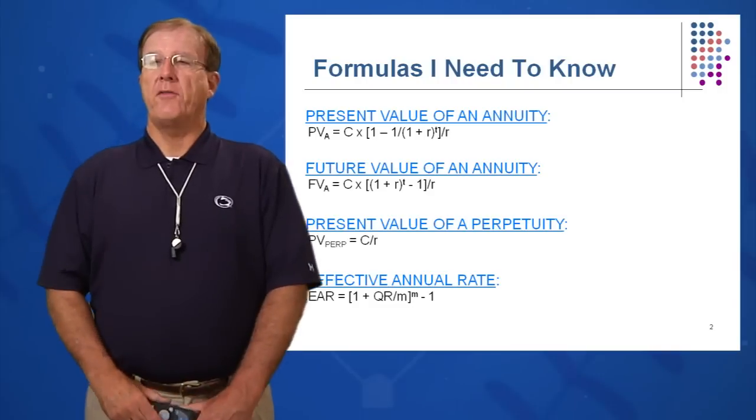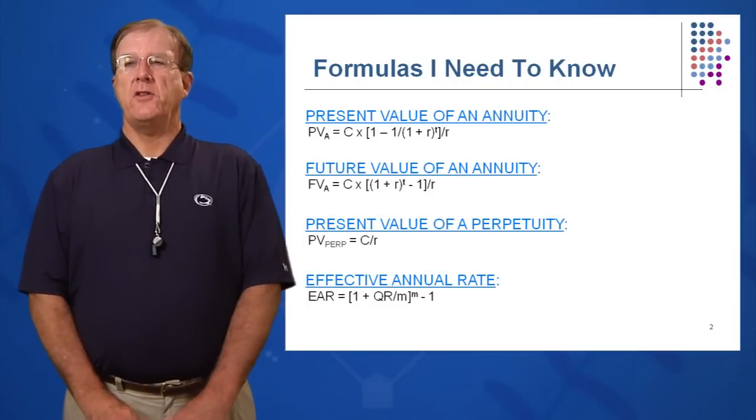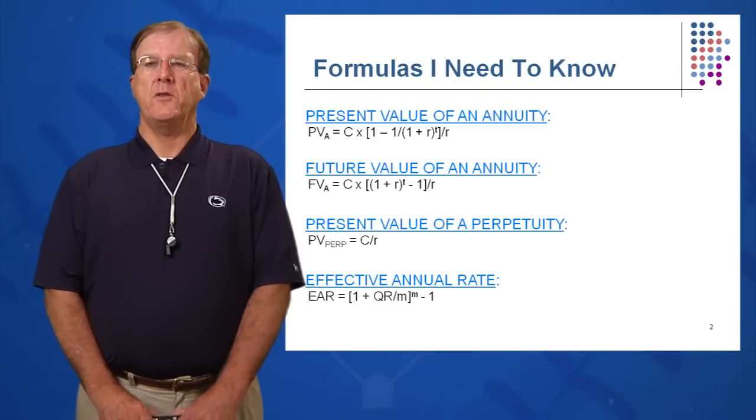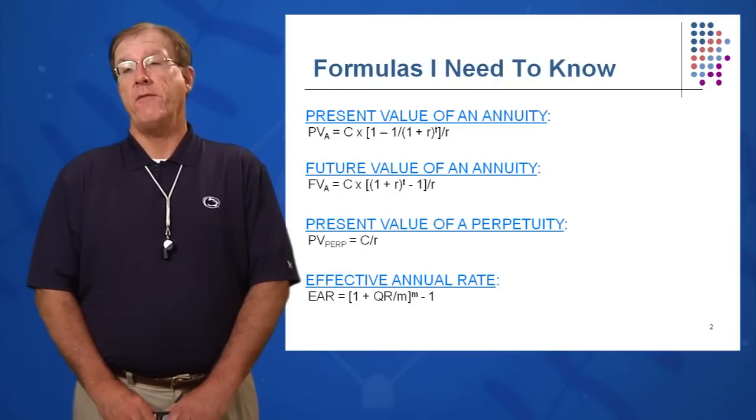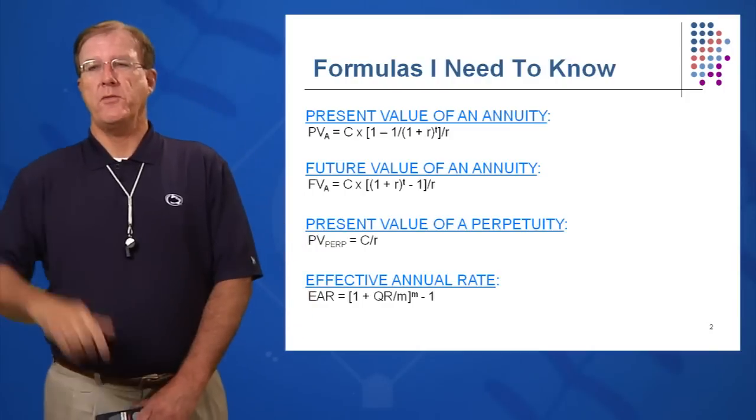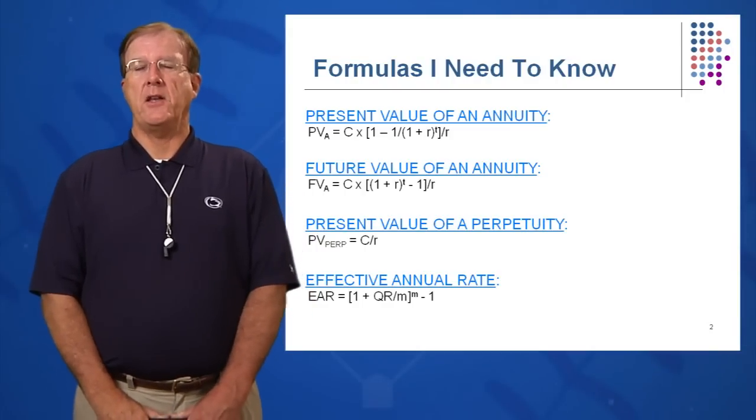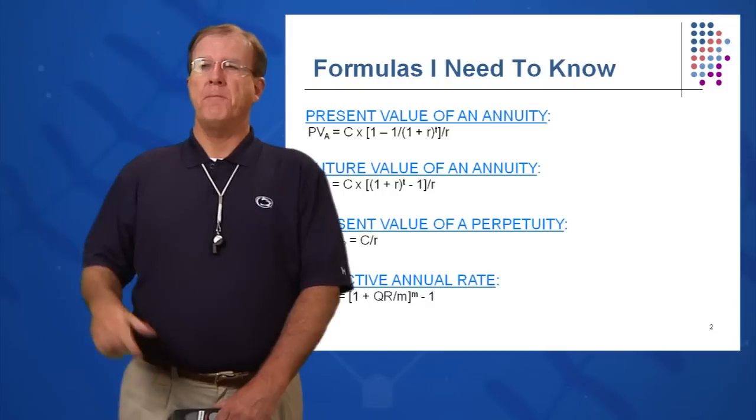So we're going to have several key equations we're going to need to know in this chapter, four of them to be specific. One is present value of an annuity and again I can use these equations if and only if the amounts I'm investing are the same amount each year. And that's what we mean by an annuity. Same amount each period.